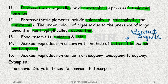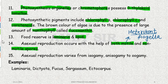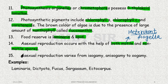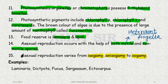Asexual reproduction also occurs through spores. Sexual reproduction proceeds through three methods — isogamy, anisogamy, and oogamy, which is the most common. Examples from Brown Algae include: Laminaria, Dictyota, Fucus, Sargassum, and Ectocarpus.